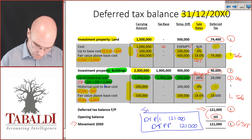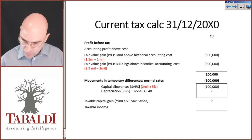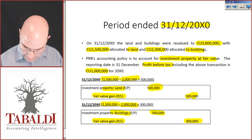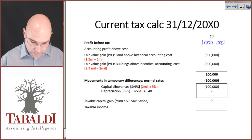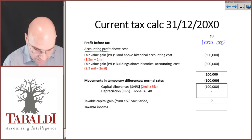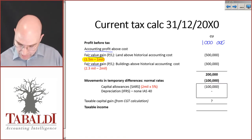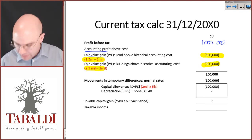Now the current tax calculation. My profit before tax was given as 1 million. I need to take out the accounting profit above cost — the fair value gains. For land that was 1.5 million minus 1 million accounting cost = 500,000. For buildings it was 2.3 minus 2 million = 300,000. These I will take and put into the capital gains calculation next.